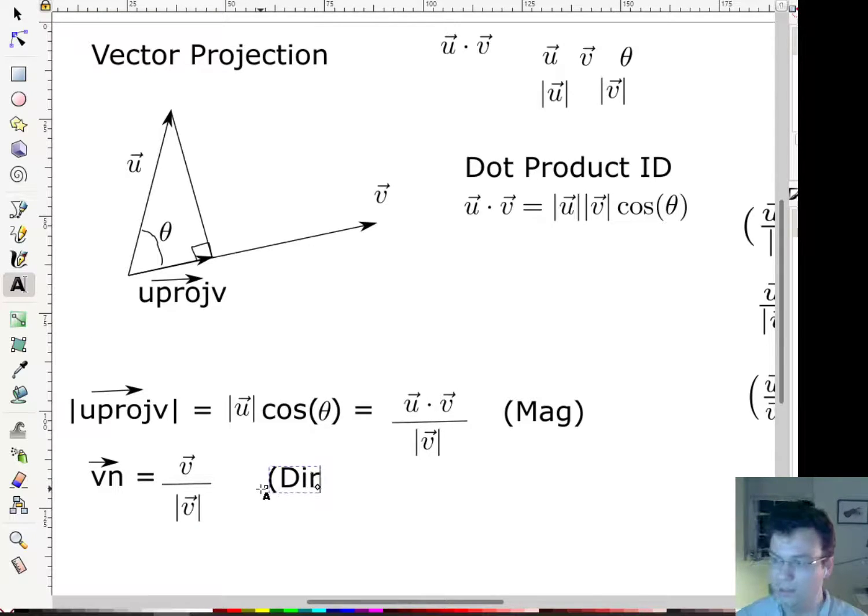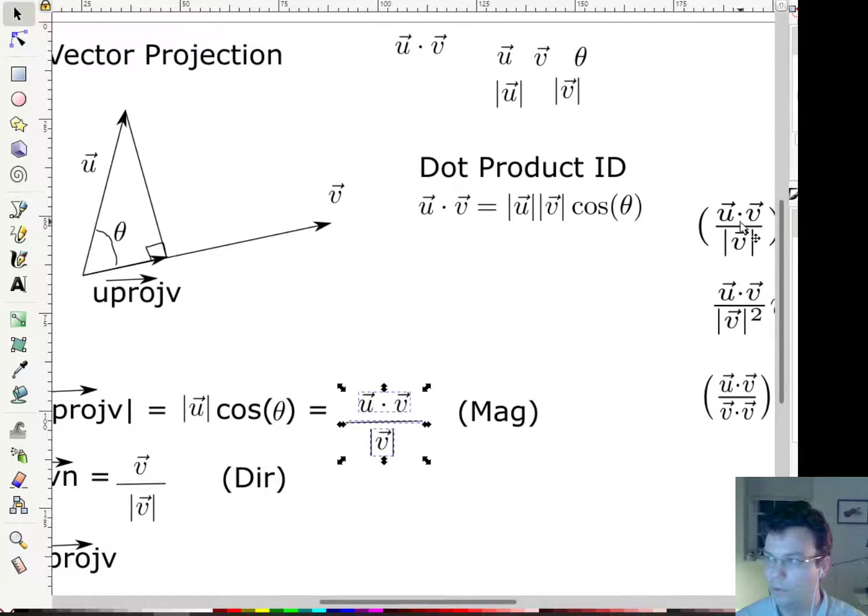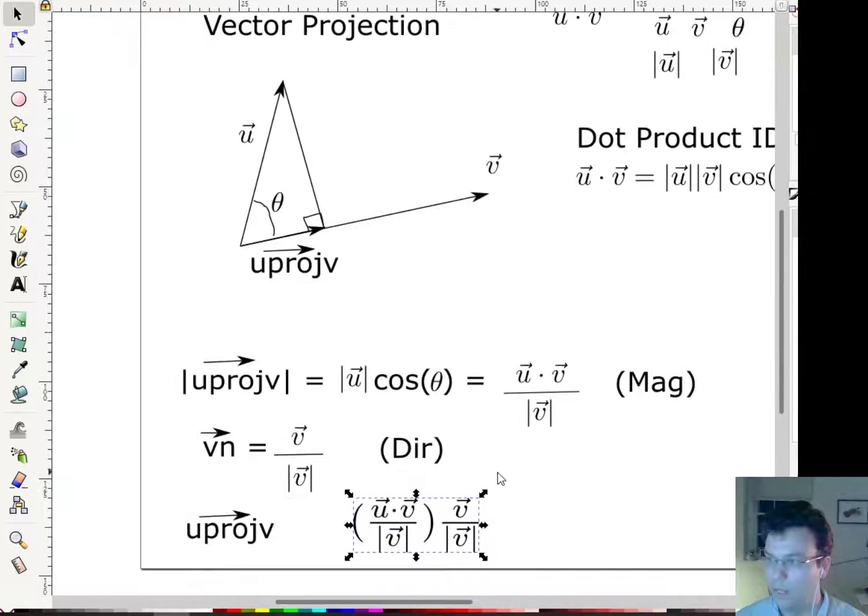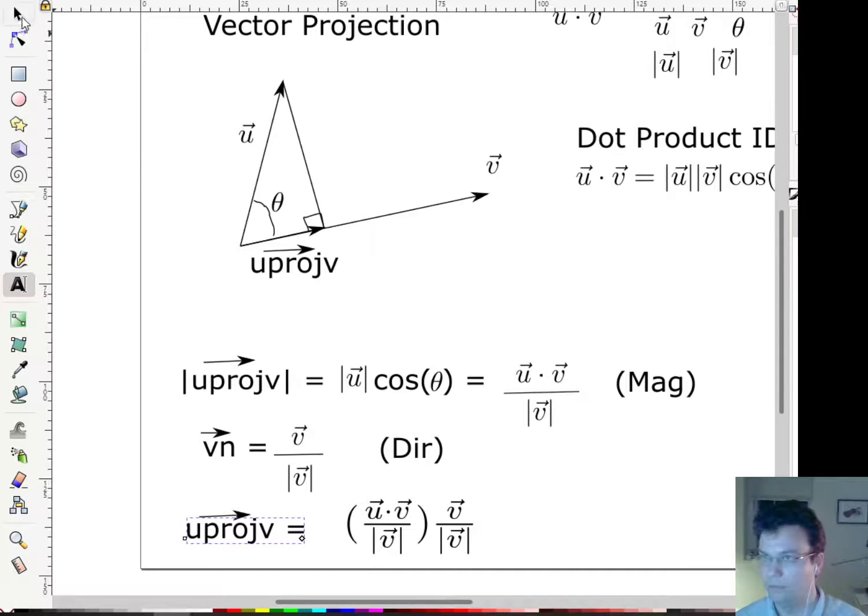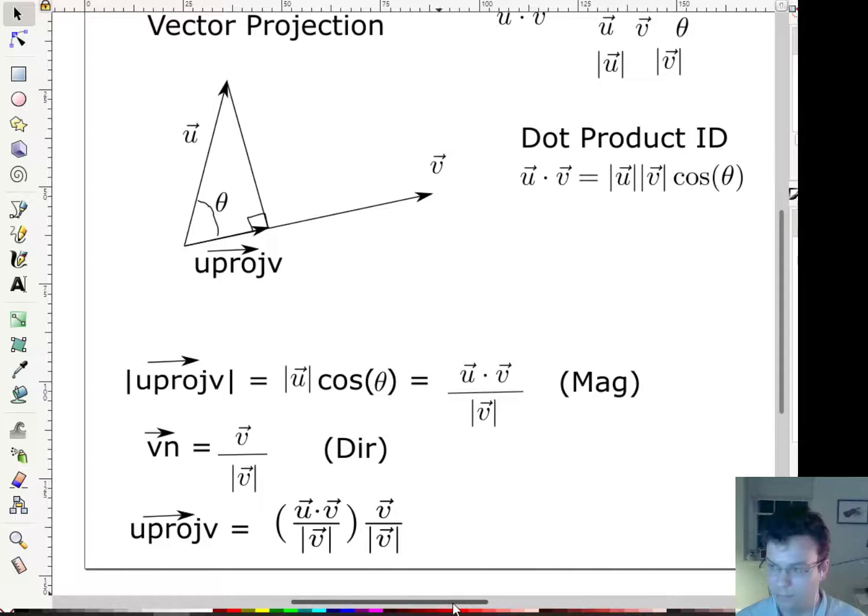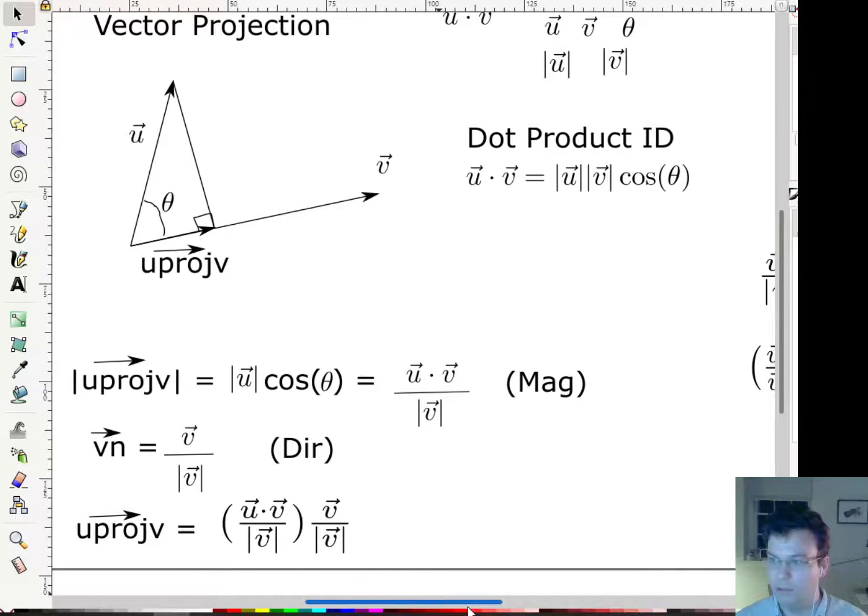And to get my u proj v, I just need to take the unit vector and multiply it by the scalar. So here's the length, and I'm going to multiply that length by the direction. So if I pull this over here, that's going to be u dot v over the magnitude of v times v over the magnitude of v. So this is an equation for the projection, and this will work perfectly fine. So there we go. So we've got an equation for the projection.